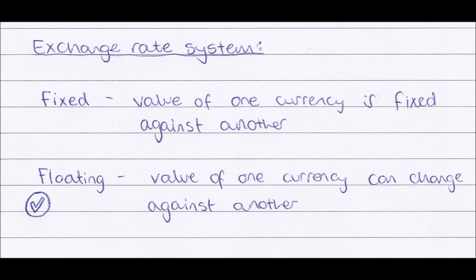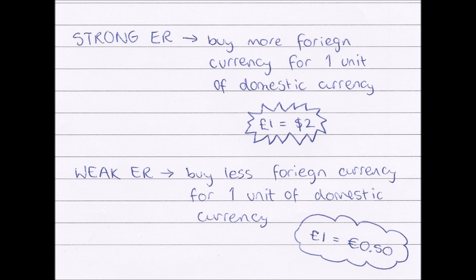Next we have a floating exchange rate system, which is the opposite of a fixed exchange rate system. Here the value of one currency can change against another — they will change all the time depending on market conditions. So one day one pound might equal one dollar twenty, but the next day one pound might equal one dollar forty-five. In the rest of our exchange rate videos we shall be assuming that a floating exchange rate system is in place.